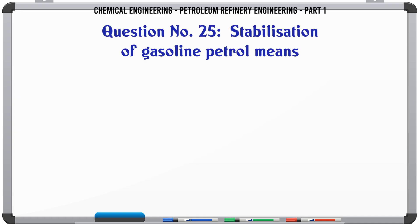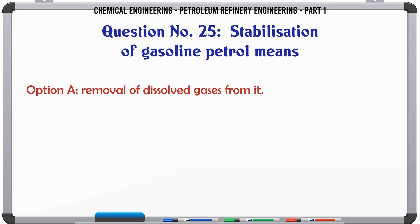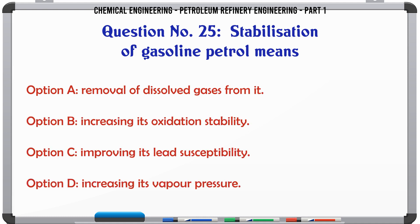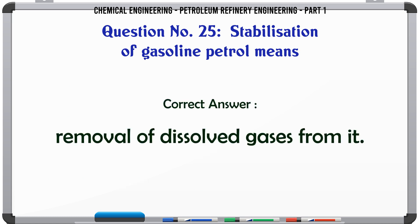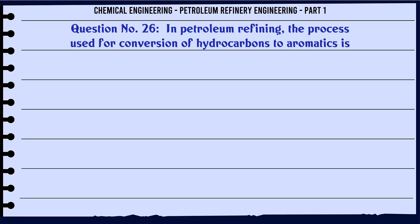Stabilization of gasoline/petrol means: A. Removal of dissolved gases from it, B. Increasing its oxidation stability, C. Improving its lead susceptibility, D. Increasing its vapor pressure. The correct answer is Removal of dissolved gases from it.